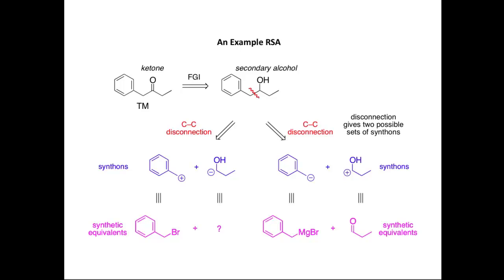These are reagents that behave like those synthons. A synthetic equivalent for this benzyl cation would be something like benzyl bromide, where we have a leaving group on this particular carbon. A synthetic equivalent for the negative charge on a carbon bearing an OH is not obvious, so we can't assign easily a synthetic equivalent for that. So we'll look at the other set of synthons.